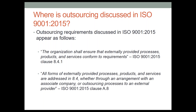From Clause 8.8 — that's the Annex — it's defined that any form of externally provided process, products, and service are addressed in 8.4, whether through an arrangement with an associate company or outsourcing processes to an external provider. In other words, if you're buying raw materials from somebody, that's an external provider. If you're sending parts up the street for plating, that's an external provider. If you're bringing in a training company to train your staff on driving a forklift, that's an external provider. All of those things fall into that category as defined by Annex A8.